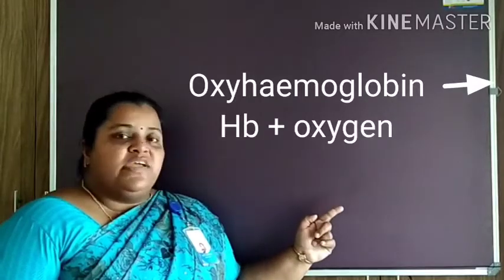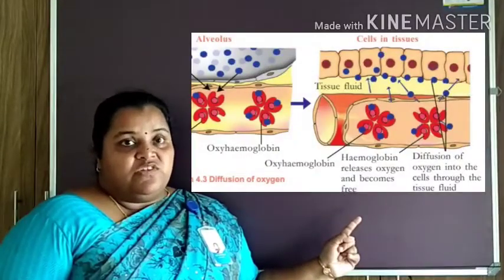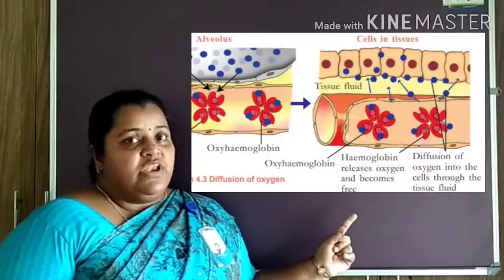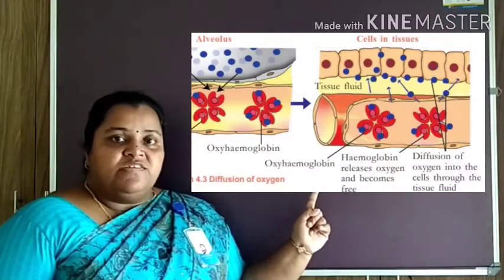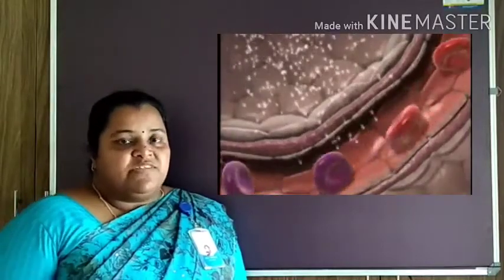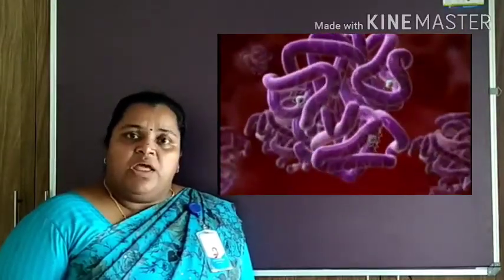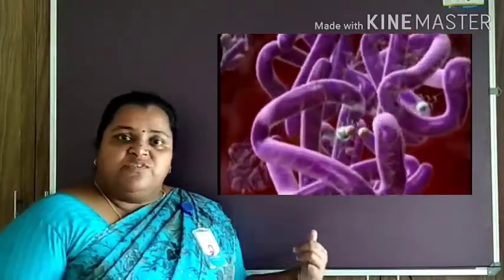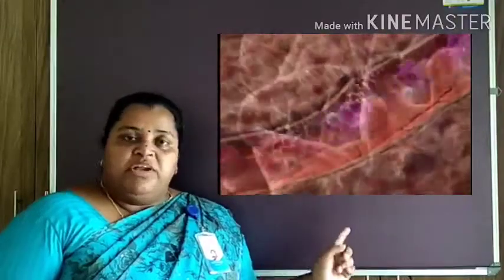Oxyhemoglobin dissociates into hemoglobin and oxygen near the cells, so the oxygen is free. By simple diffusion, oxygen in the blood capillaries enters into the tissue fluid, and from the tissue fluid, oxygen enters into the cells.